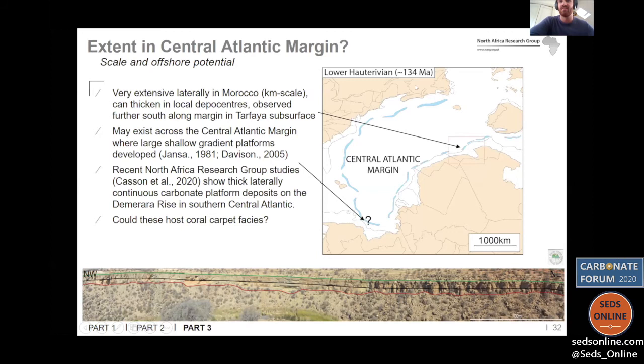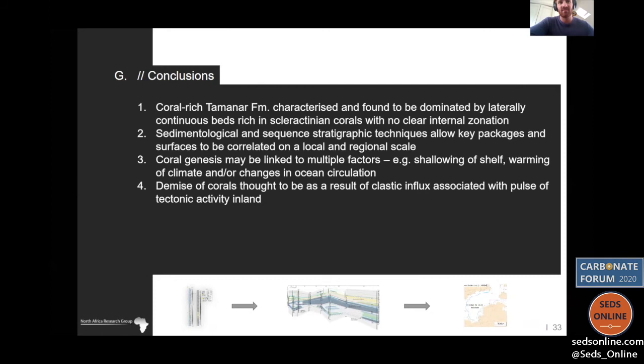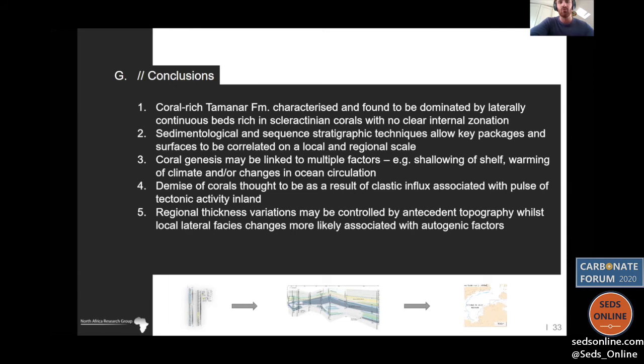In conclusion: the Taminar Formation skeletonized coral carpets show no clear internal zonation. The depositional model suggests corals formed under multiple factors; demise was likely related to clastic influx; thickness variations were controlled by pre-existing Jurassic topography while autogenic factors controlled local lateral facies changes. These coral carpets may exist beyond Morocco on a larger scale. Thank you very much.